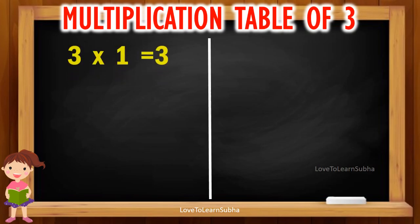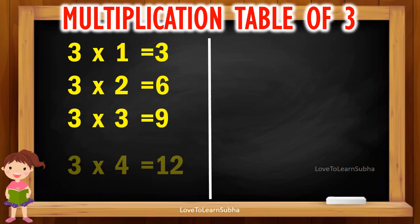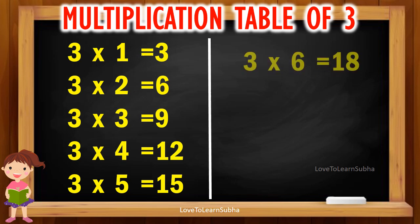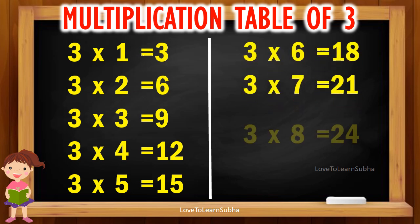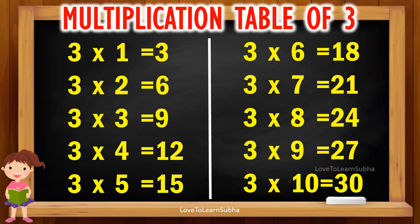Multiplication table of 3. 3 4s are 12, 3 5s are 15, 3 6s are 18, 3 7s are 21, 3 8s are 24, 3 9s are 27, 3 10s are 30.